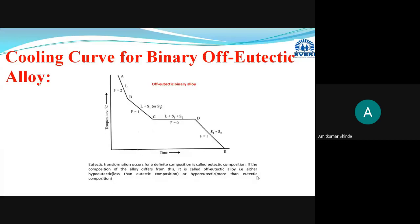In this lecture we have completed the different types of cooling curves. We learned the cooling curve for pure metal, then cooling curve for binary solid solution alloy, then cooling curve for binary eutectic alloy, and cooling curve for binary off-eutectic alloy. We also learned the concept of eutectic alloy, off-eutectic alloy, and the difference between hypoeutectic and hypereutectic alloys. In the next lecture we will start the lever-arm principle.